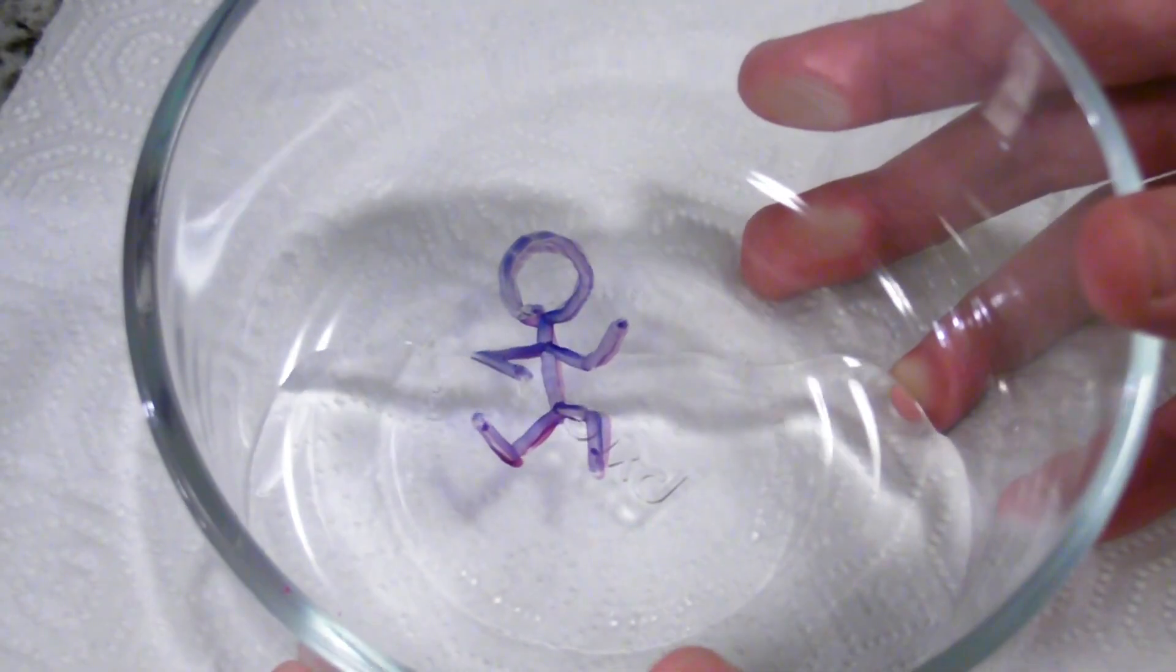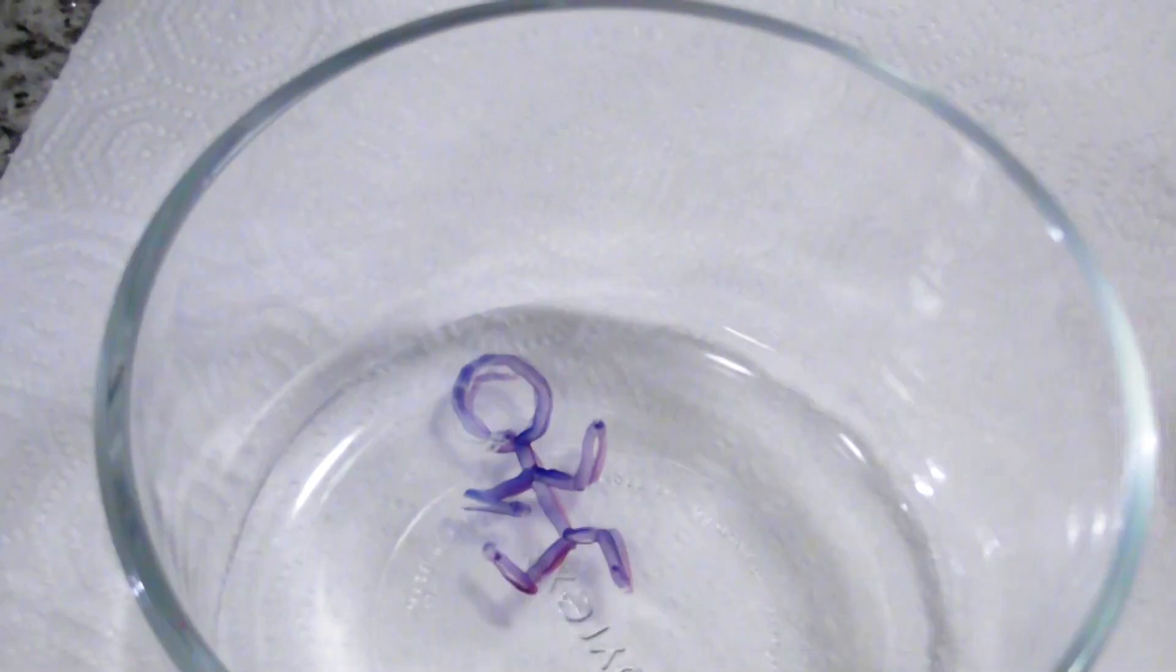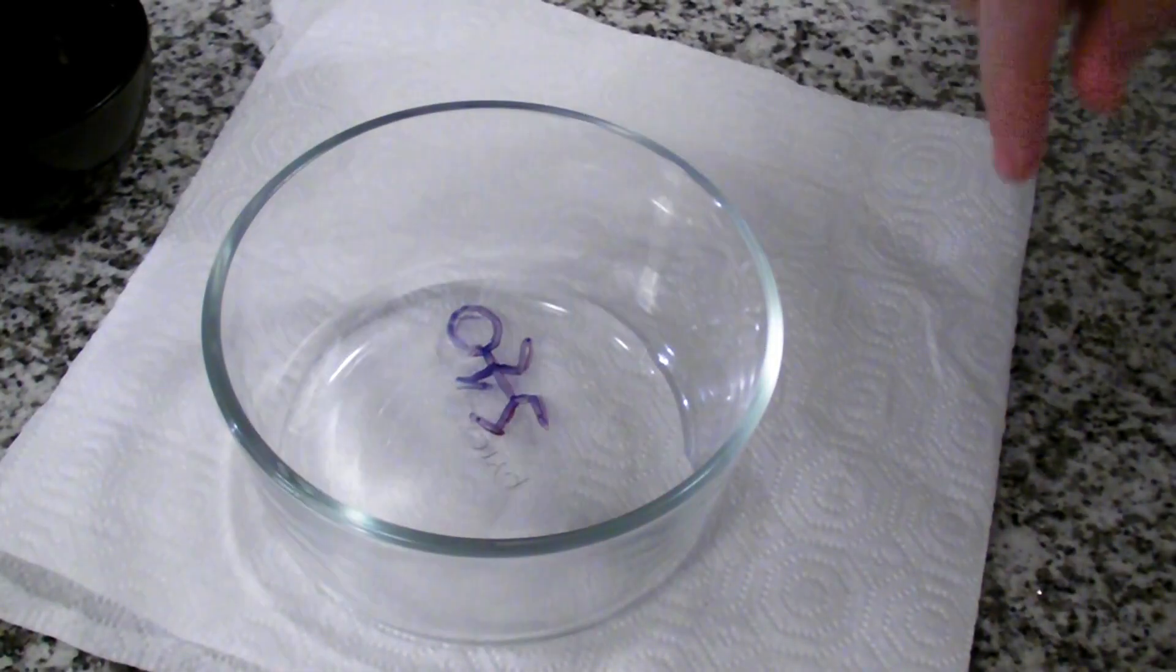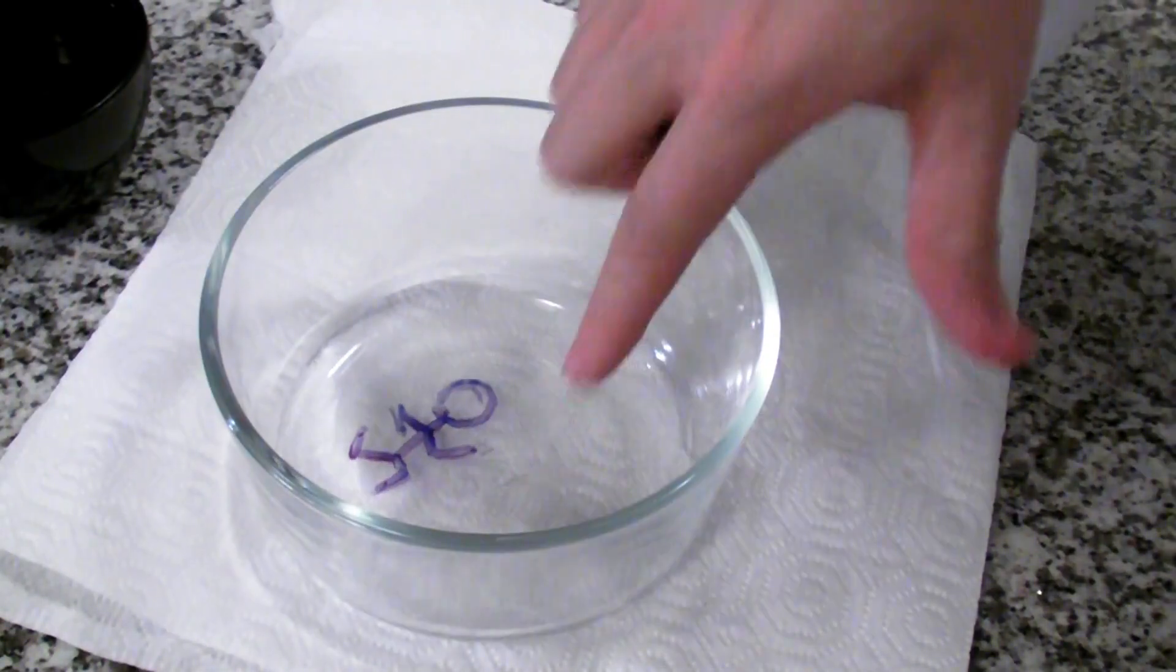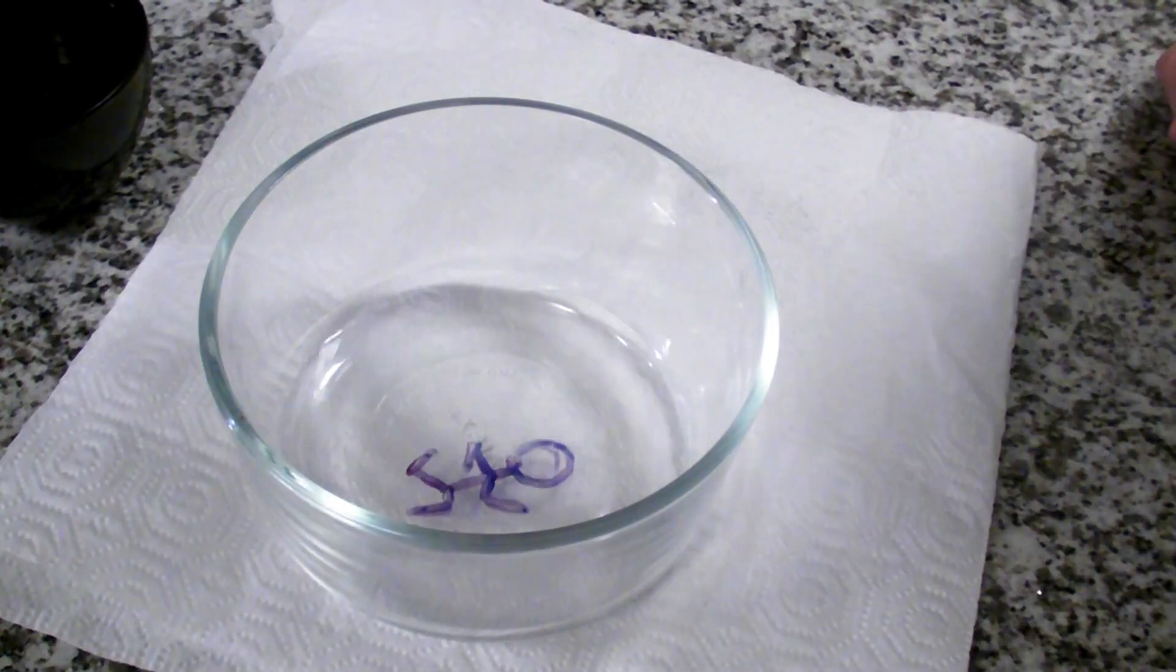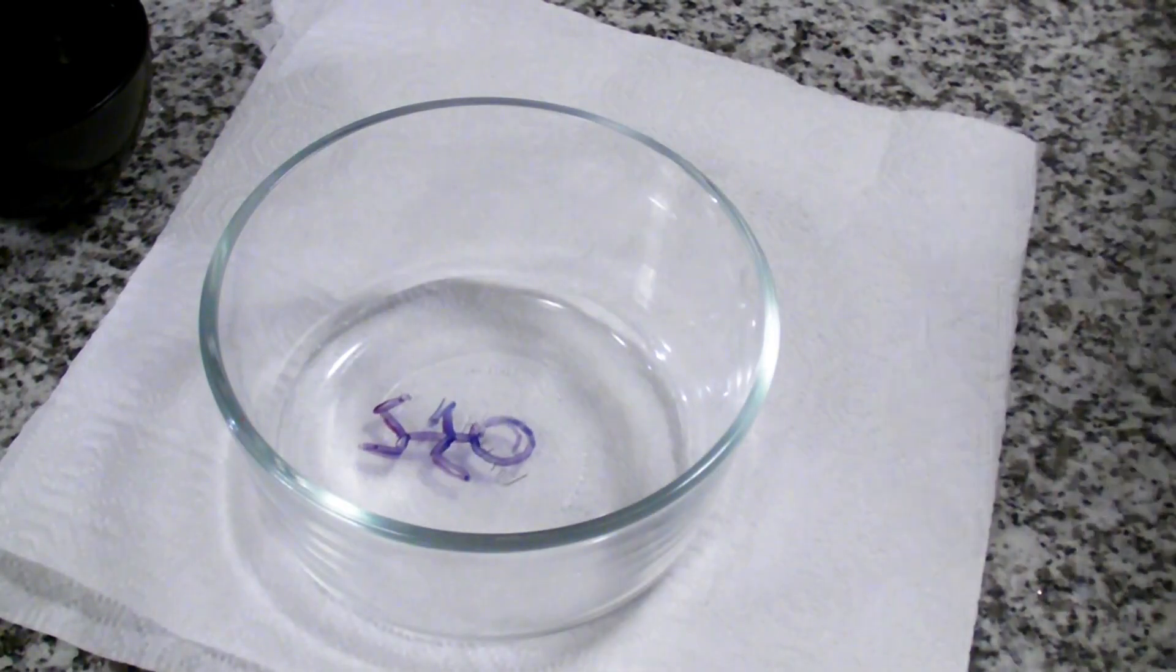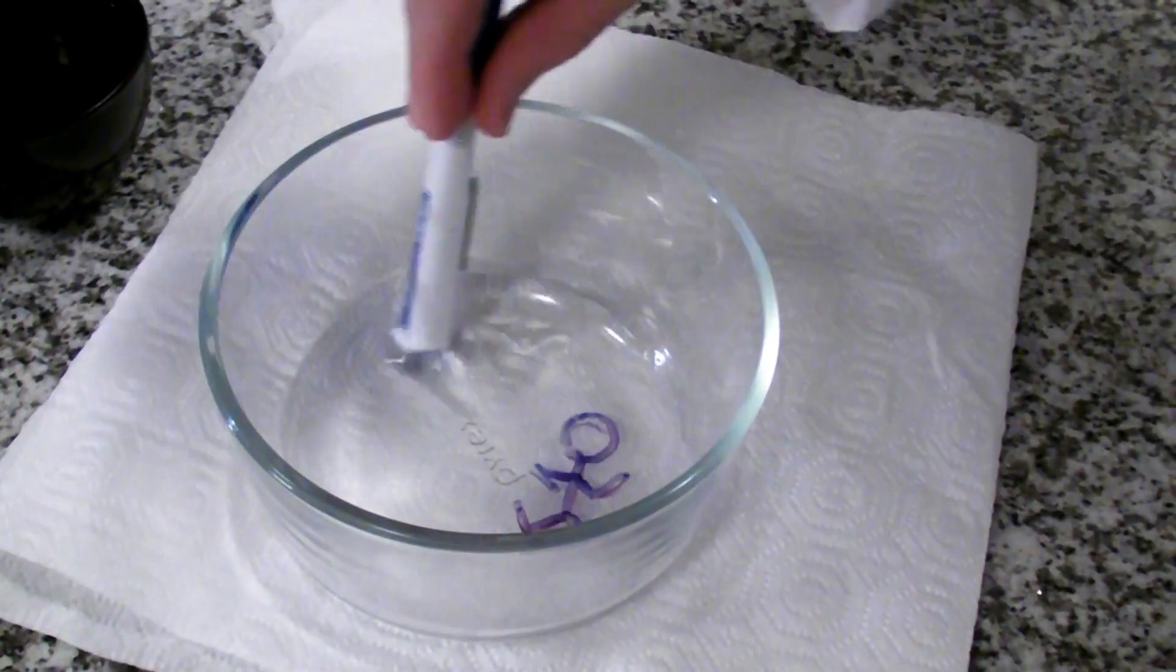And it's alive! Well, it's certainly moving, which is cool. So now I have my man, my little stick figure running man, floating in this water. And you can see it is floating on top of the water. I can blow on it to get him to move around a little bit. I can use the end of that pen to run him around so he looks like he's doing laps around the bowl.